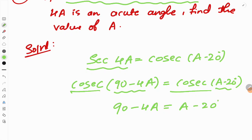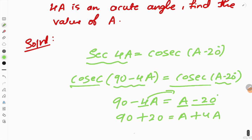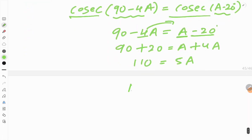Rearranging the equation: bringing minus 20 to the left side gives 90 plus 20, and bringing minus 4A to the right gives plus 4A. So 90 plus 20 equals A plus 4A. That's 110 equals 5A. Therefore 110 divided by 5 equals A.